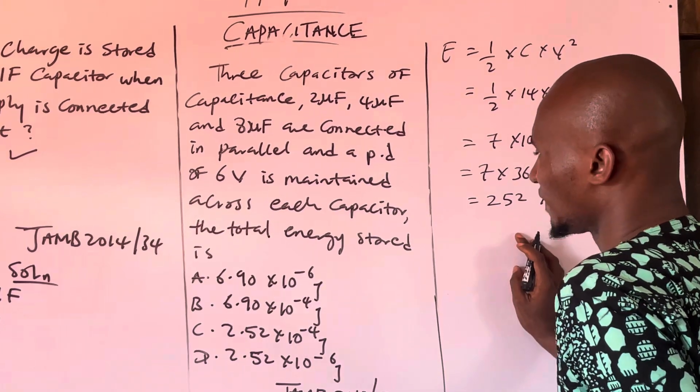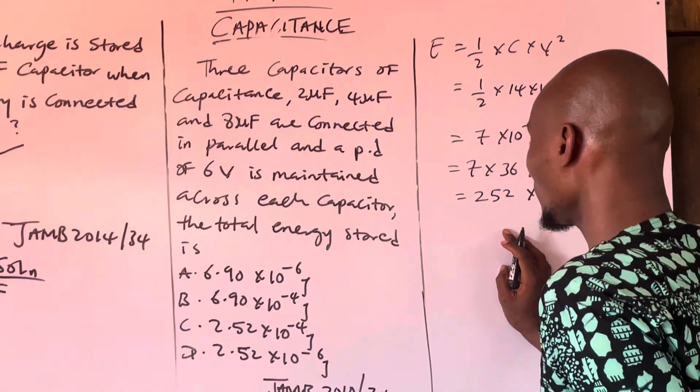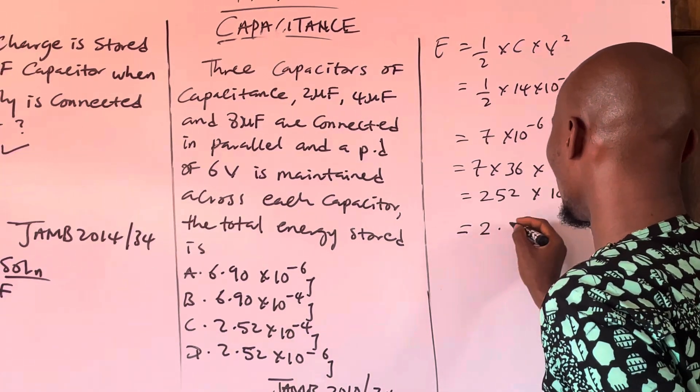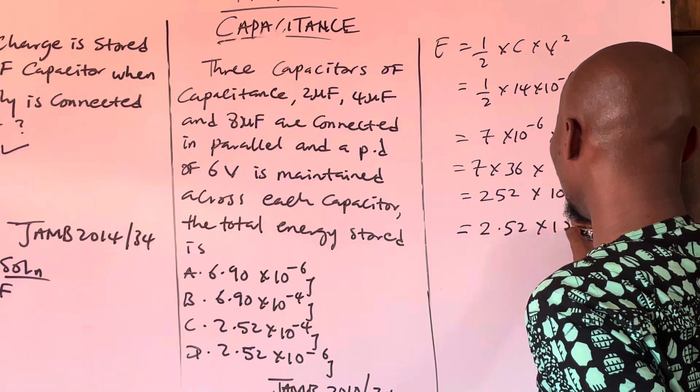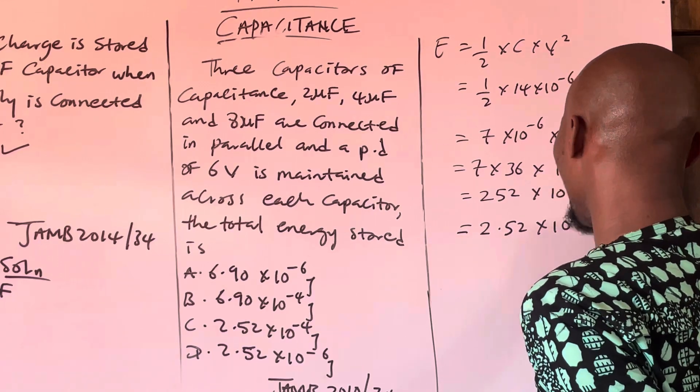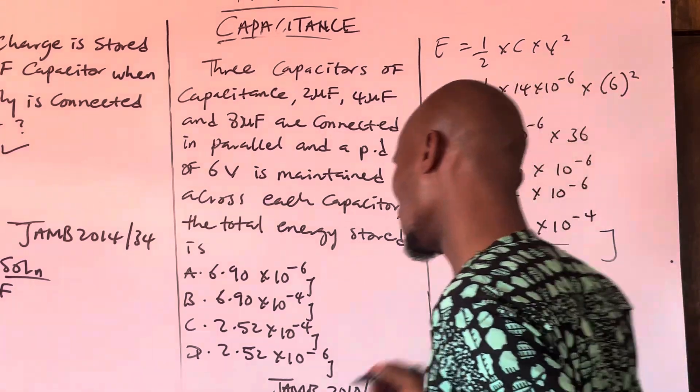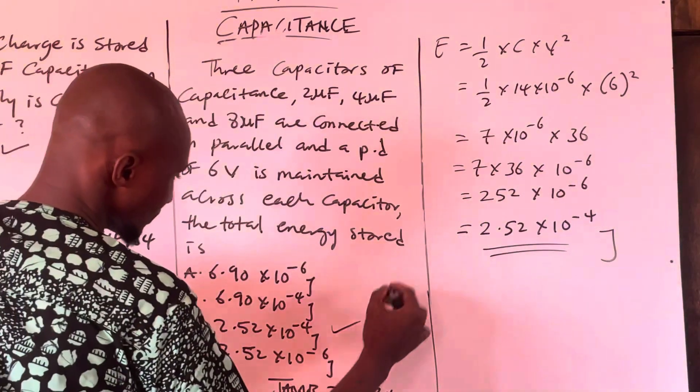This gives us 252 times 10 to the minus 6, which equals 2.52 times 10 to the minus 4. And the answer is C.